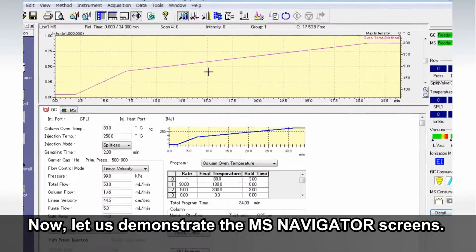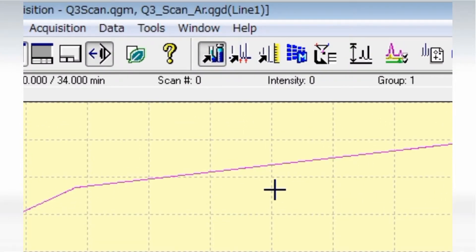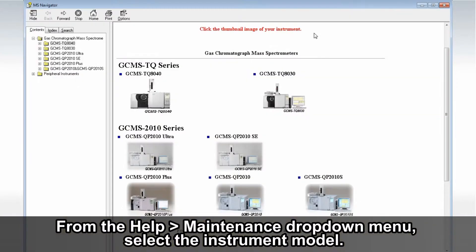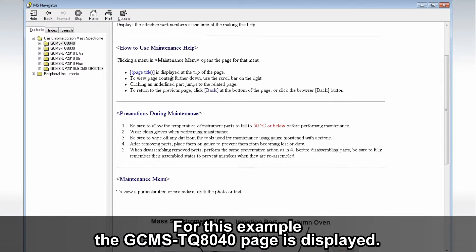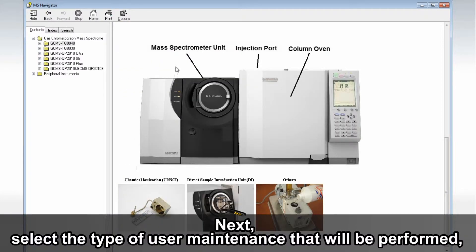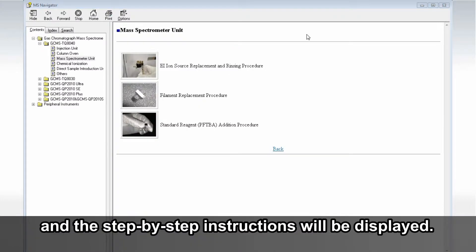Now, let us demonstrate the MS Navigator screens. From the Help Maintenance drop-down menu, select the Instrument model. For this example, the GC-MS TQ8040 page is displayed. Next, select the type of user maintenance that will be performed and the step-by-step instructions will be displayed.